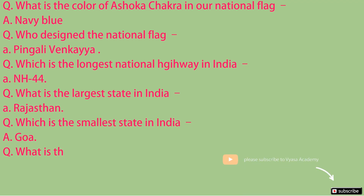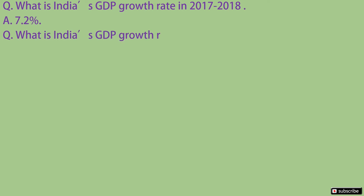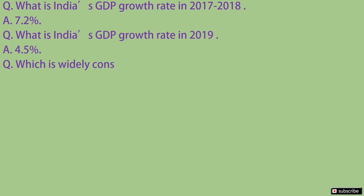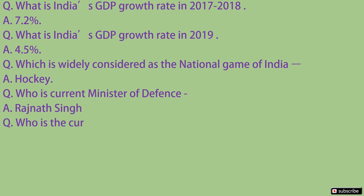What is the literacy percentage of India? It's 74.4%. What is India's GDP rate in 2017 to 2018? It's 7.2%. What is India's GDP growth rate in 2019? It's 4.5%. Which is the widely considered national game of India? It's Hockey. Who is the current Minister of Defense? It's Rajnath Singh. Who is the current Minister of Home Affairs? It's Amit Shah.